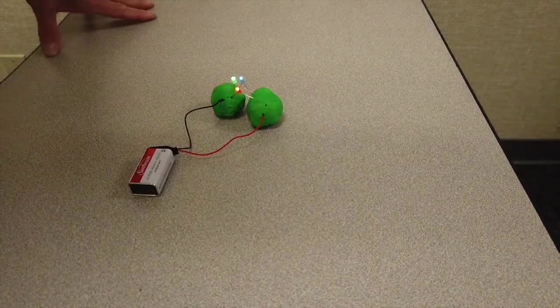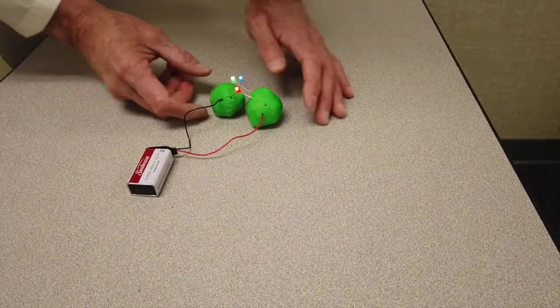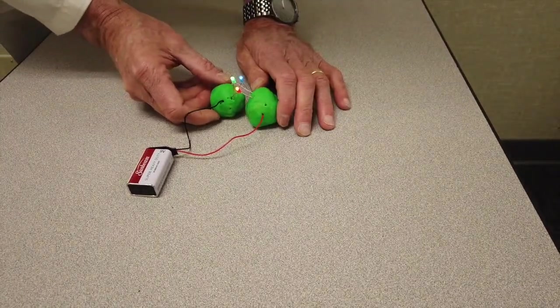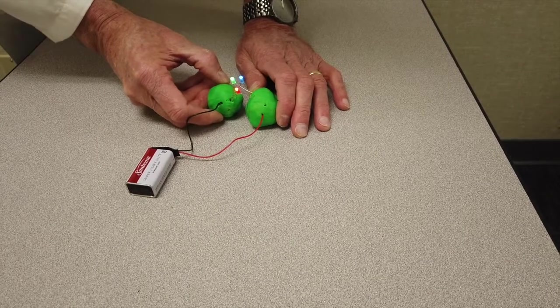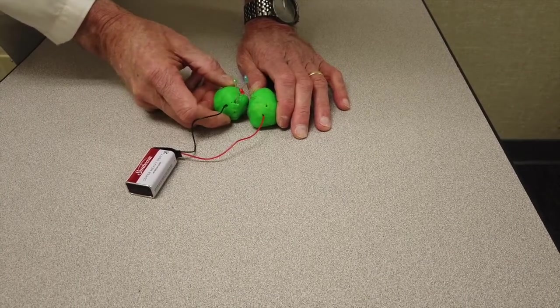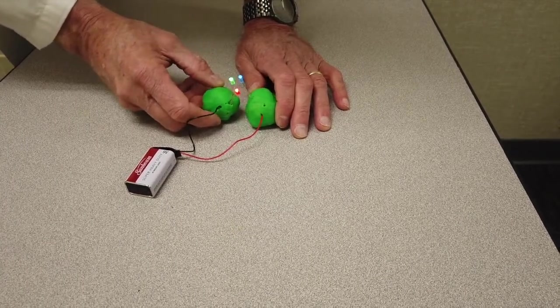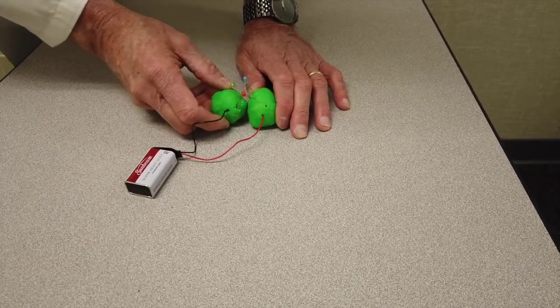Now there's some other interesting things you can do. If the two lumps of dough touch, the lights go out. Why is that? It's like a light switch. Off, on, off, on.